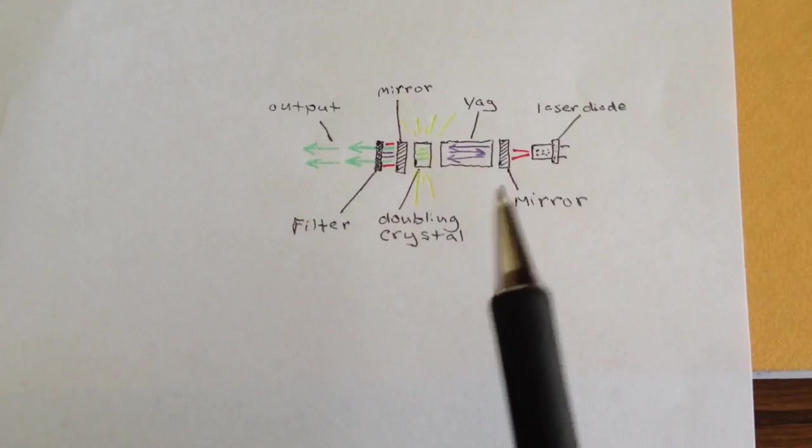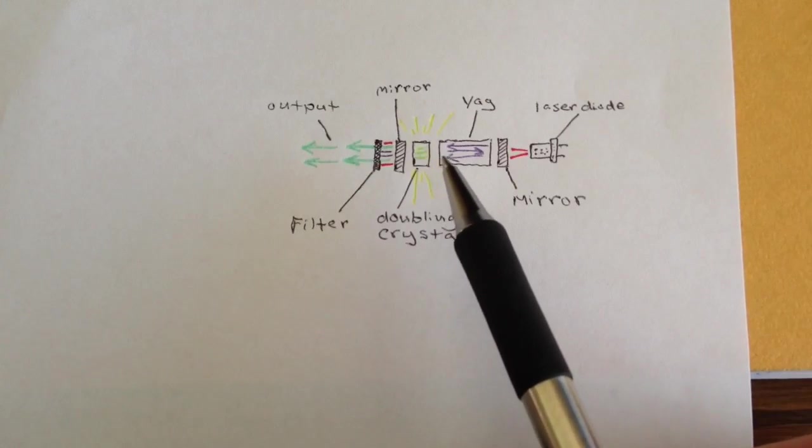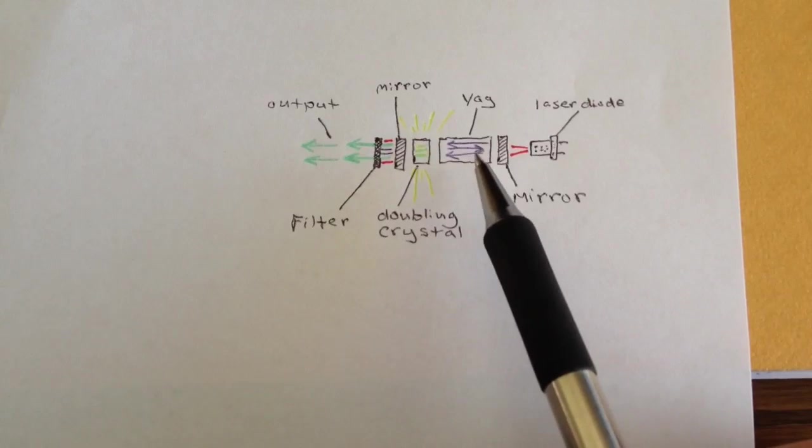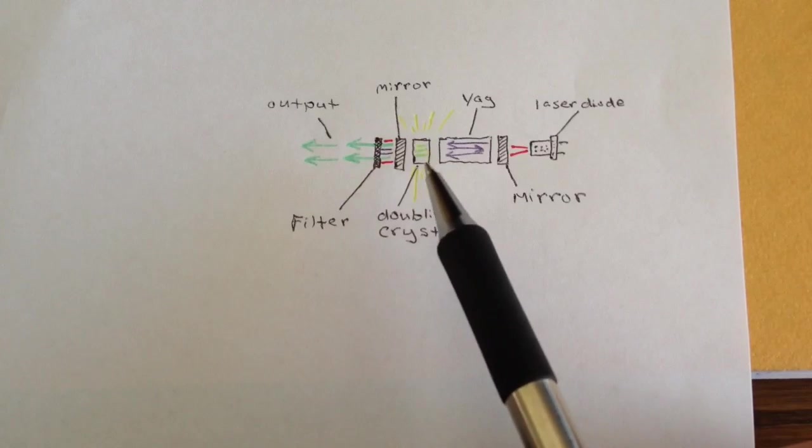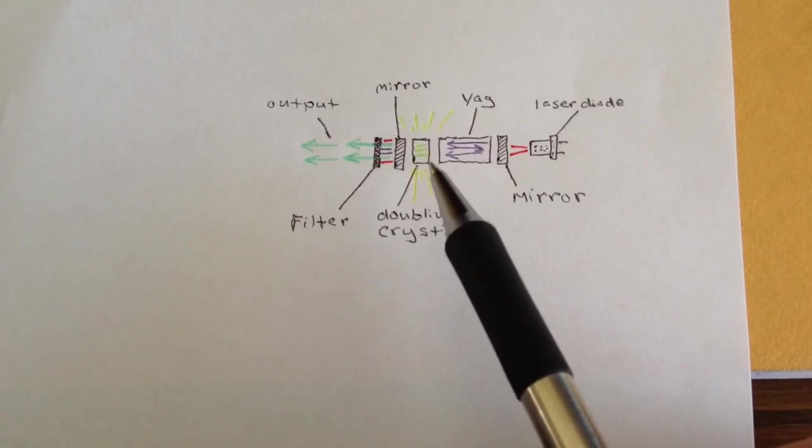And you also have a second crystal here, which converts the 1064 nanometers into the visible 532 nanometers in the green range of wavelengths, which we see in the output.